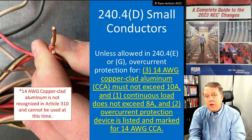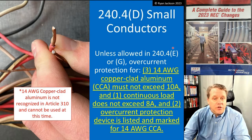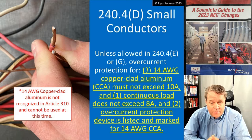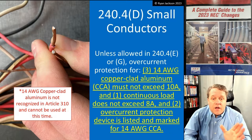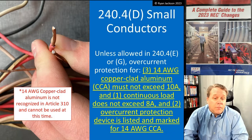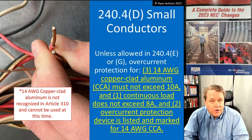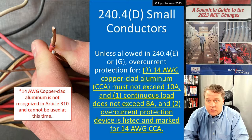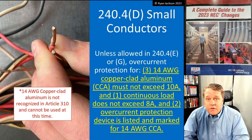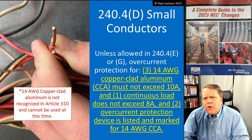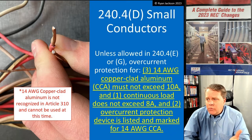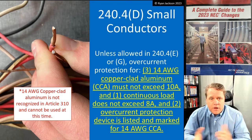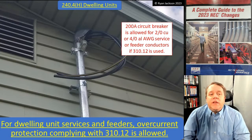Unless allowed in (E) or (G), overcurrent protection for 14 AWG copper-clad aluminum must not exceed 10 amps, the continuous load must not exceed 8 amps, and the overcurrent protection device must be listed and marked for use with 14 AWG copper-clad aluminum. This conductor type isn't currently being manufactured because it can't be installed yet, but if it's ever allowed — perhaps in the 2029 NEC — we'll be ready to install and protect it.